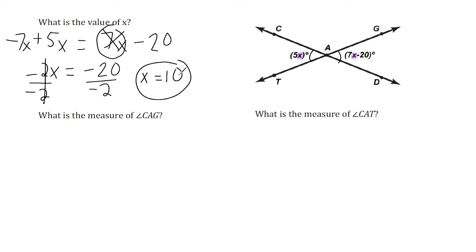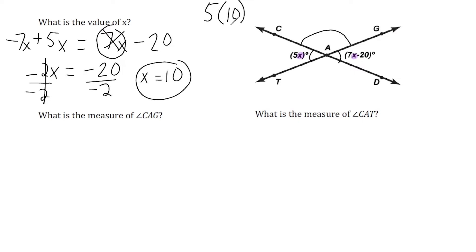Now we're going to use this to answer other questions. The next question asks us to find the measure of angle CAG. Here's C, here's A, and here's G — CAG is this obtuse angle right here. Before we can find that measure, we have to find the measure of one of the acute angles. I'm going to take the 10 we found for x and plug it into the expression 5x: 5 times 10 is 50. So this angle right here is 50 degrees.